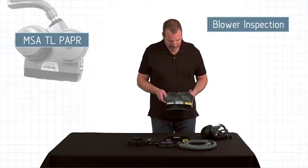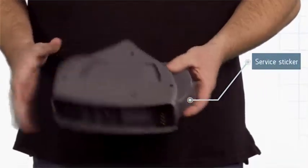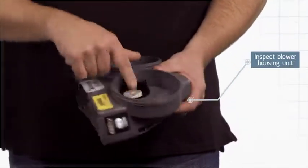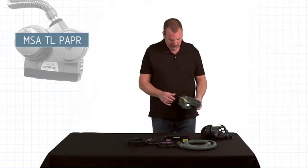To inspect the MSA TL, verify the service sticker. Inspect the blower housing unit. Look for anything in the blower housing and any cracks or physical defects in the plastic.